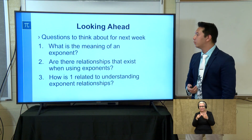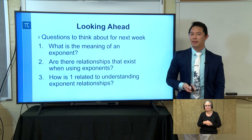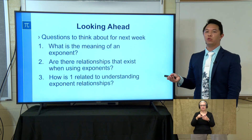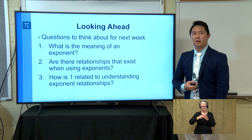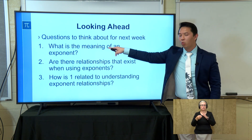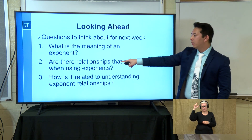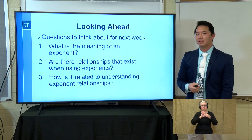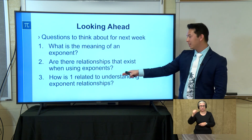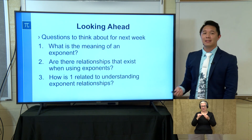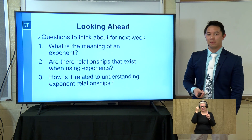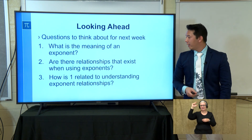As we look ahead to next week, we're going to transition away from critical standard 2 towards critical standard 3. The questions I want you thinking about for next week: What is the meaning of an exponent — something you should have explored in elementary and middle school, but we want to revisit. What relationships exist when we're using exponents? And how is the number 1 related to understanding exponent relationships?